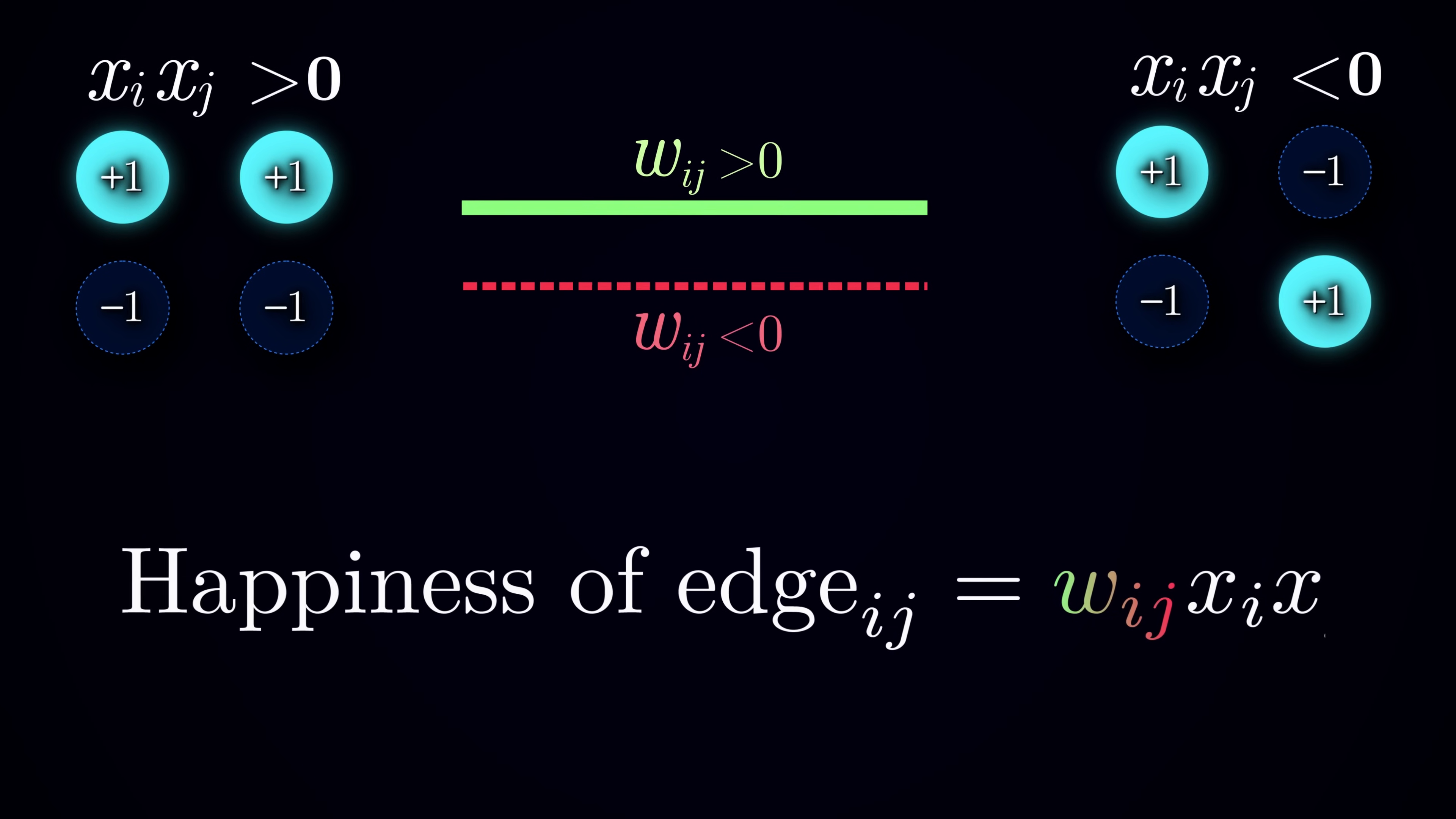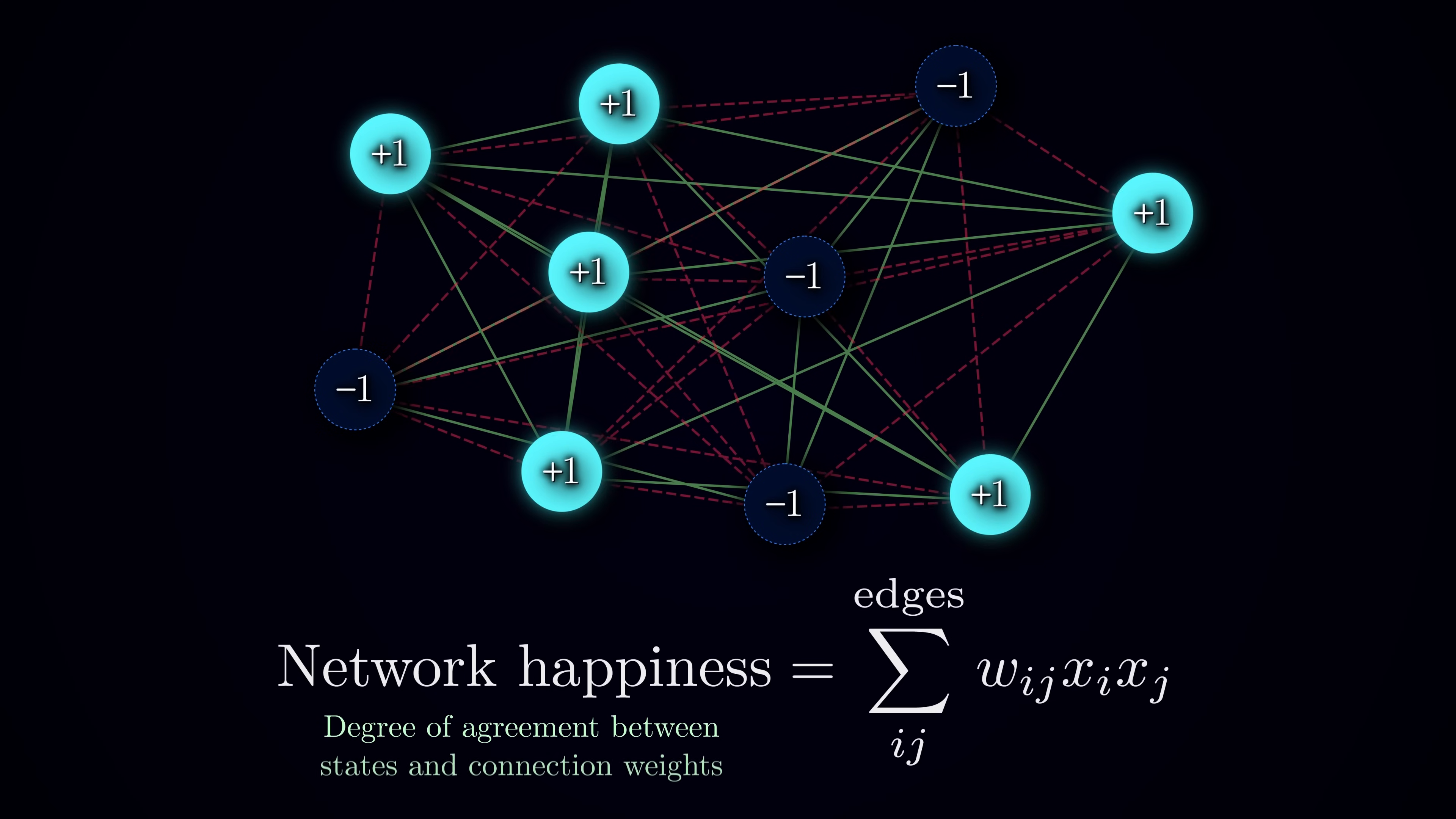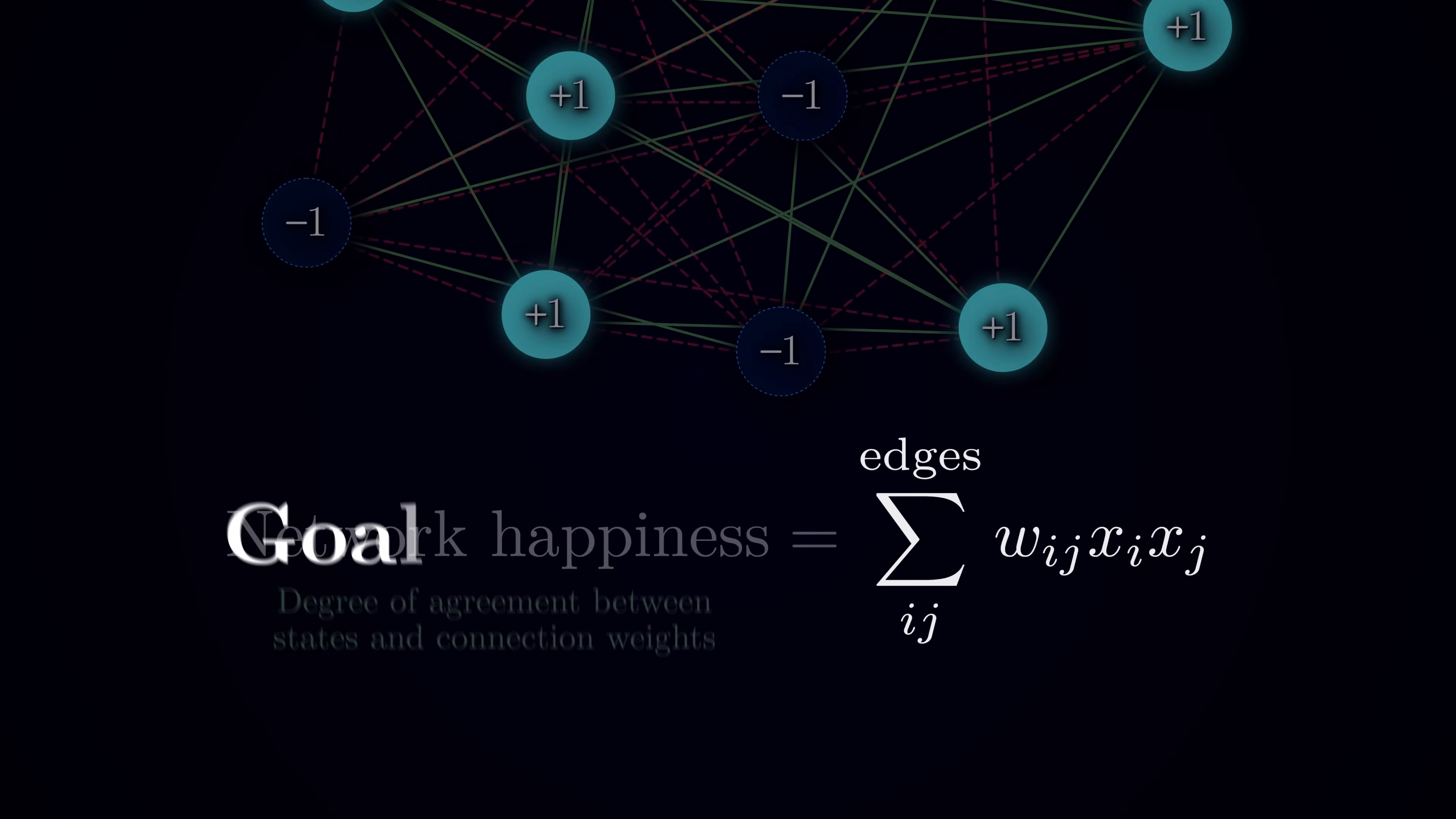But this is just one edge. We can extend this idea and compute the happiness of the entire network as a whole by summing this quantity across all edges. The larger that number is, the more overall agreement there is between connection weights and pairwise states of neurons.